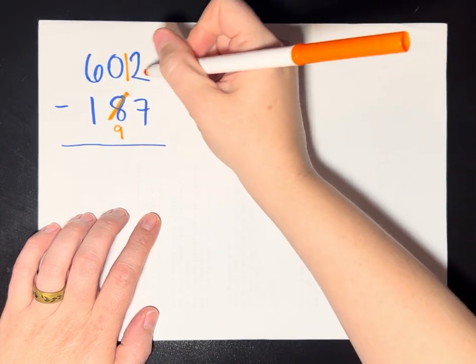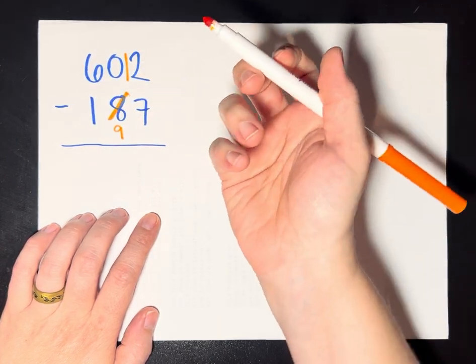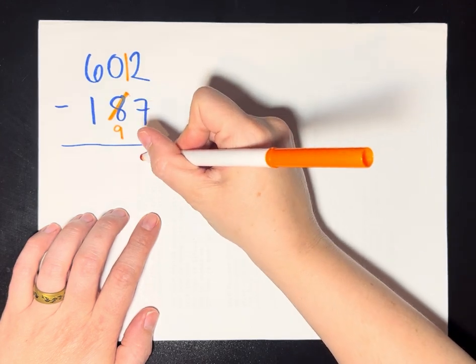to put my 1 here. This 2 becomes 12. And now I know I can take 7 away from 12, and I get 5.